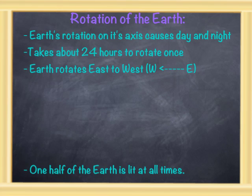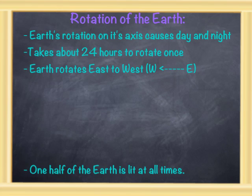The next point is that Earth rotates east to west. This diagram right here is showing east to west. Now this is a really hard concept to understand, so I'm going to draw out a picture to try to explain it.